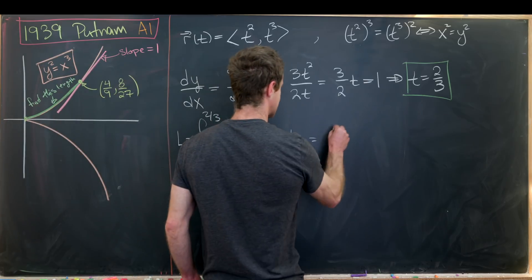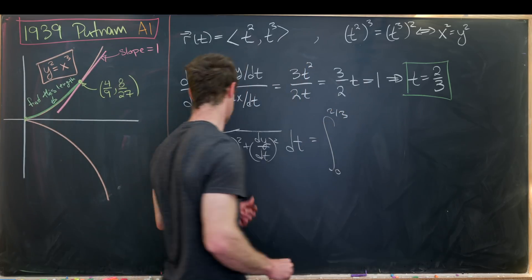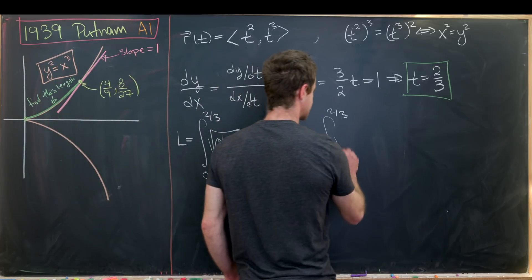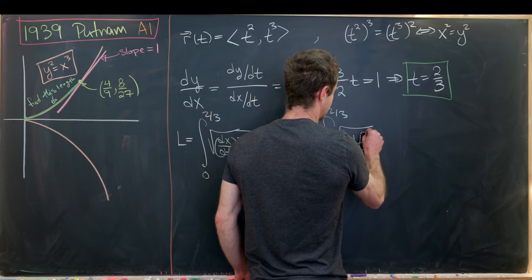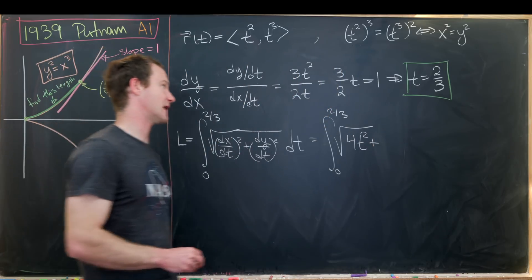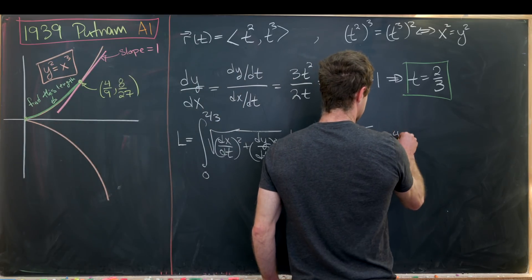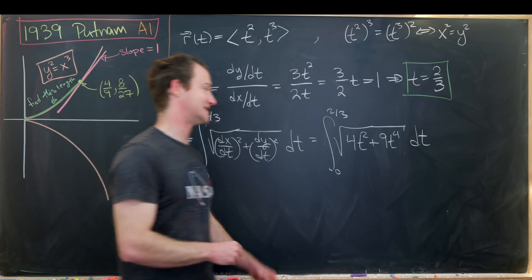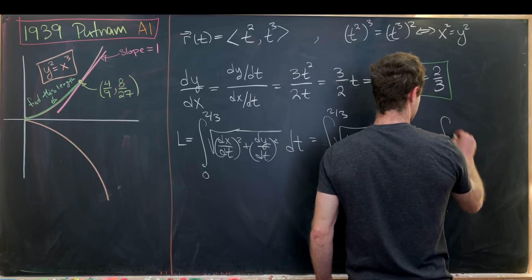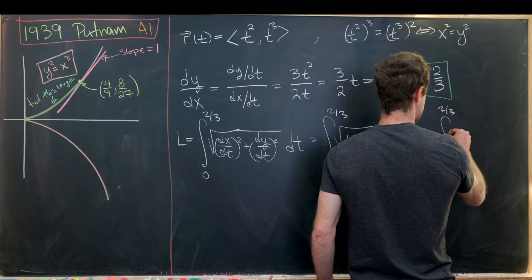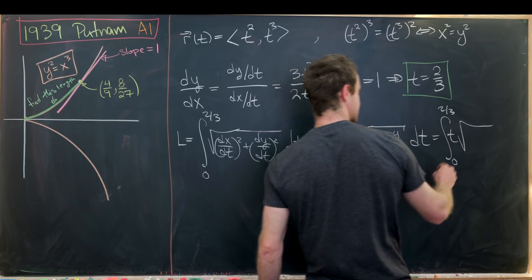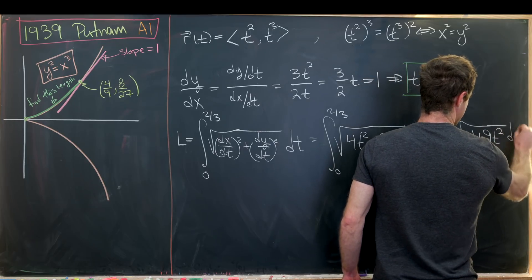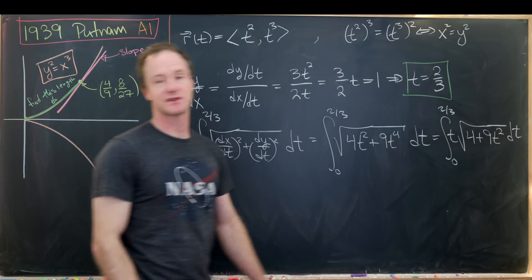That's going to give us the integral from 0 to 2/3. dx/dt squared, that's going to be 4t squared, so we have the square root of 4t² plus dy/dt squared, that will be 9t to the fourth. We'd probably like to factor a t squared out of this. That'll leave us with the integral from 0 to 2/3 of t times the square root of 4 plus 9t² dt.